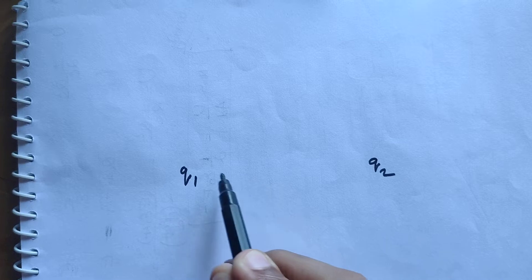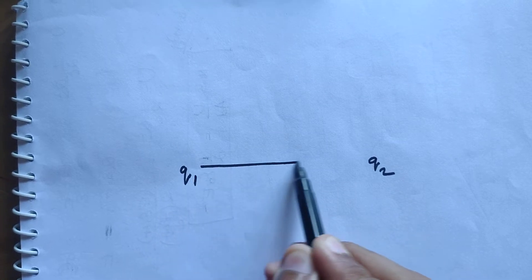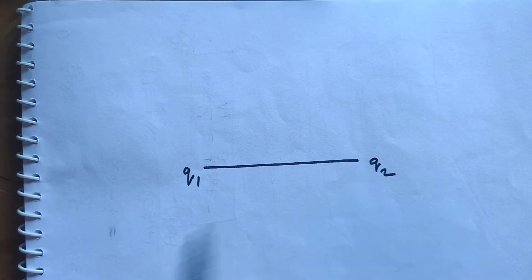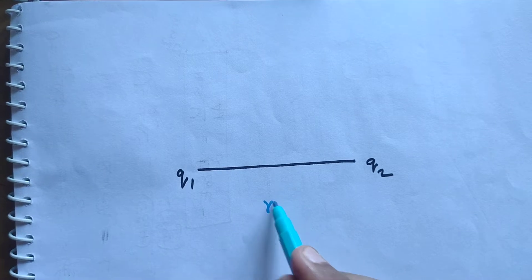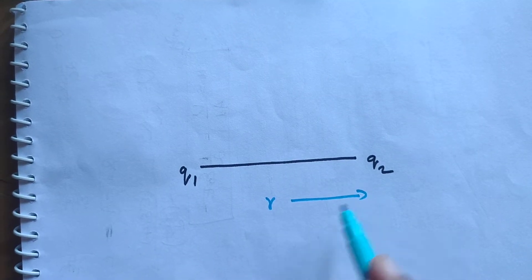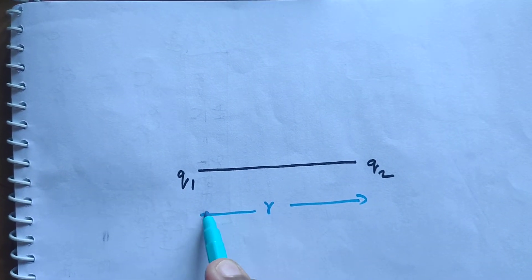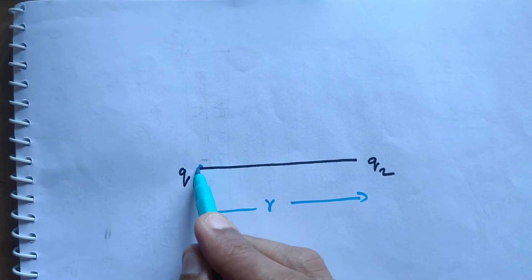Consider two charges Q1 and Q2, separated by a certain distance. Let that distance be R — the distance of separation between the two charges.